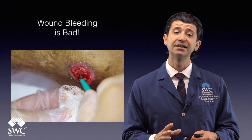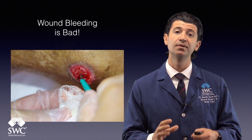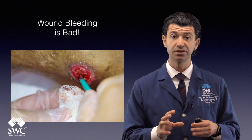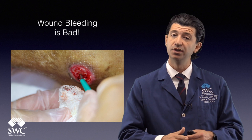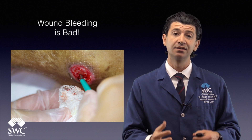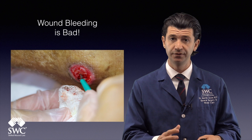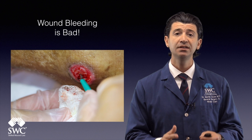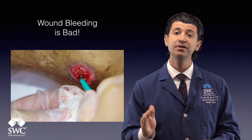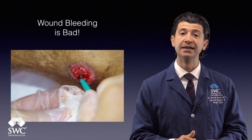The next thing I'd like to dispel is that wound bleeding is bad. We actually perform a debridement to get down to healthy bleeding tissue, so some bleeding after a debridement is good. We don't want to see profuse bleeding, but we want to get down to the tissue that's bleeding. That's how we know that the tissue is actually alive — if it bleeds. If the tissue typically doesn't bleed, it's probably not living tissue, and we haven't debrided down to the level that we want.